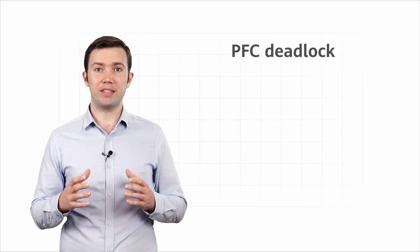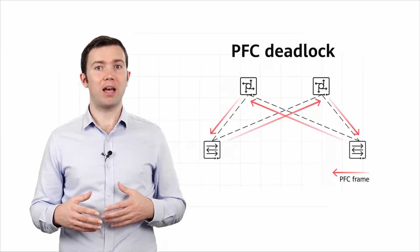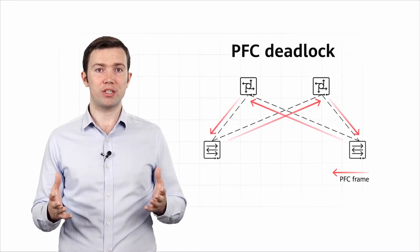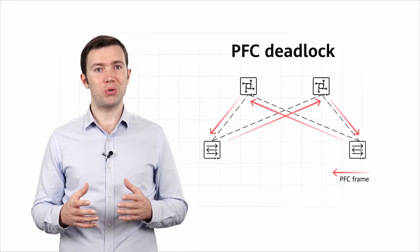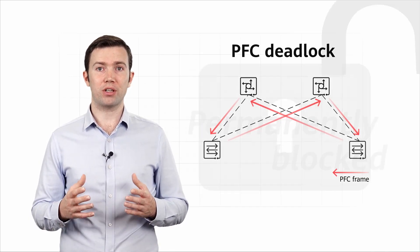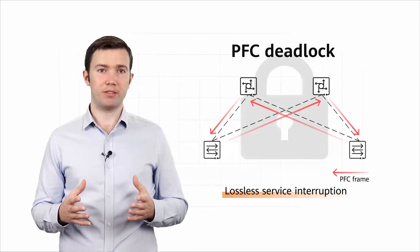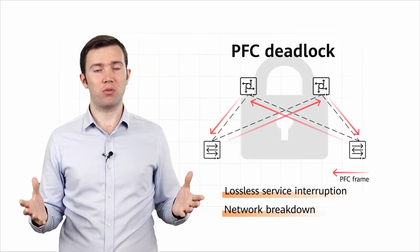A PFC deadlock occurs when multiple devices send PFC frames to each other, and wait for each other to release resources after congestion is relieved. This causes traffic to be permanently blocked. Once a PFC deadlock occurs and is not removed in a timely manner, lossless services will be interrupted, or in some cases, the entire network will break down.